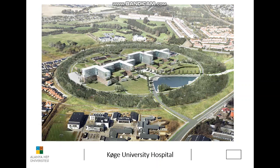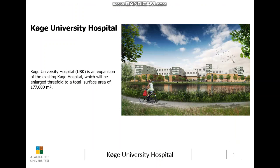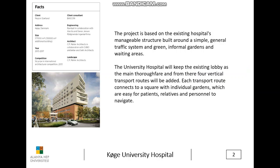One of the case studies, Koch University Hospital, is an expansion of the existing Koch Hospital which will be enlarged threefold to a total surface area of 177,000 square meters. The project is based on the existing hospital's manageable structure, built around a simple general traffic system and green informal garden and waiting areas.